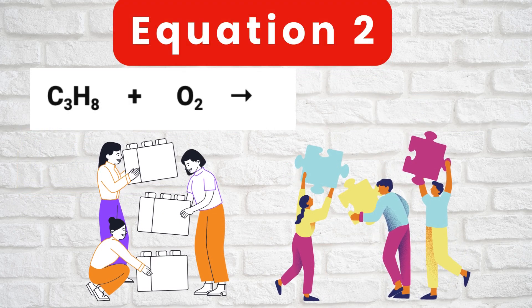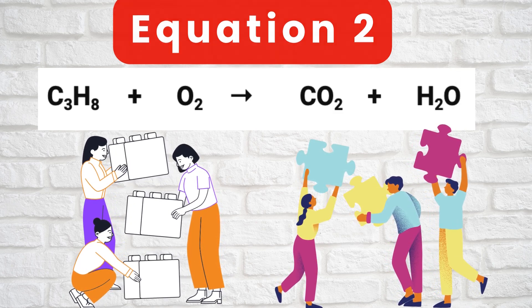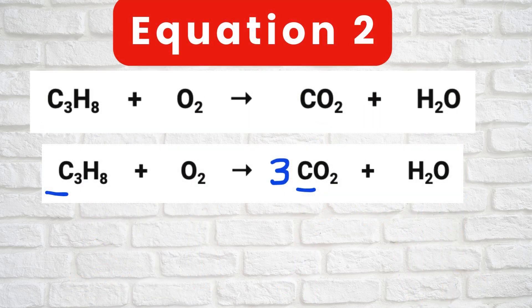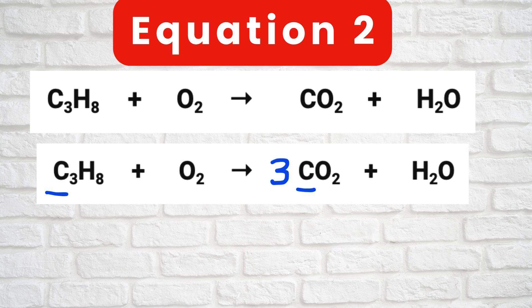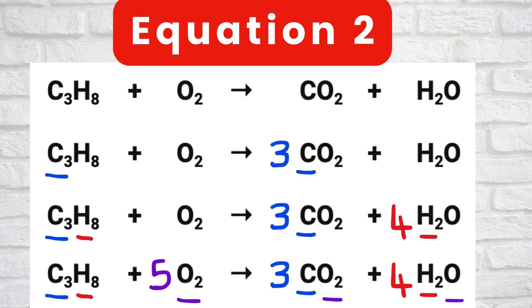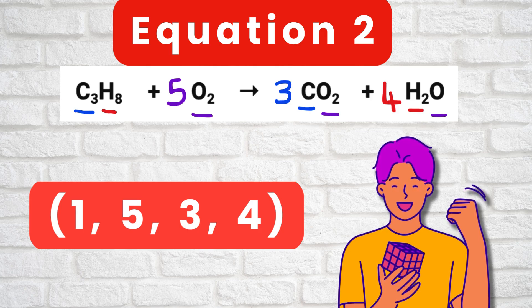Equation 2: C3H8 plus O2 gives CO2 plus H2O. Let us balance carbon first since it appears only once on either side — put a coefficient of 3 in front of CO2, so carbon is 3 on both sides. To make hydrogen 8 on both sides, put a coefficient of 4 in front of H2O. Now oxygen on the right is 3 times 2 equals 6, plus 4, which is 10. So put a coefficient of 5 in front of O2. The equation is balanced; coefficients are 1, 5, 3, 4.